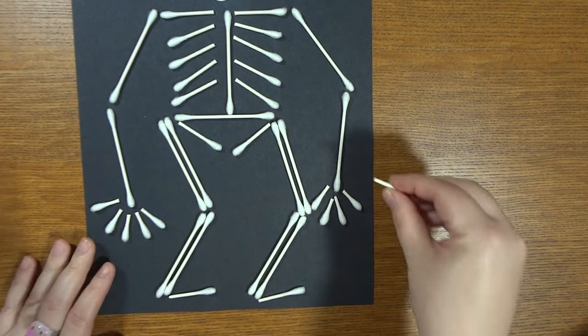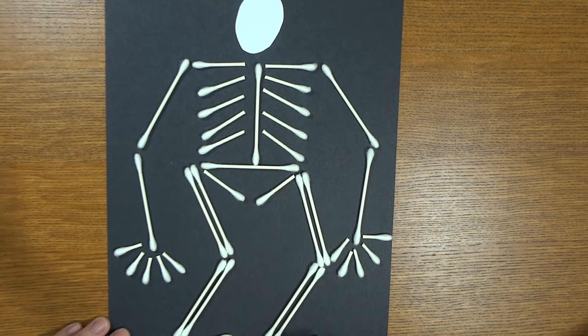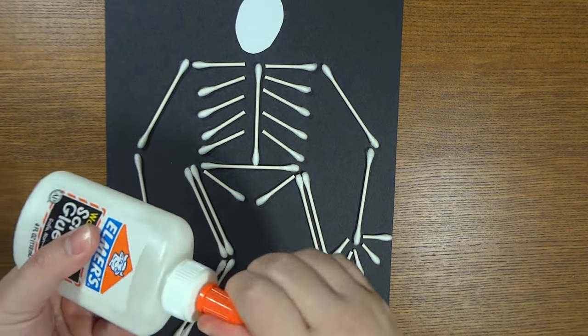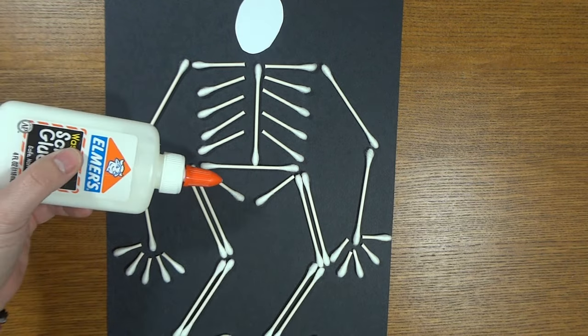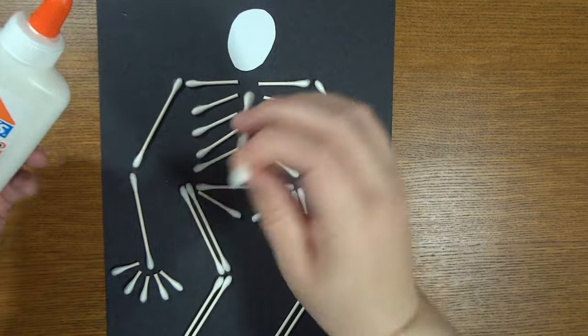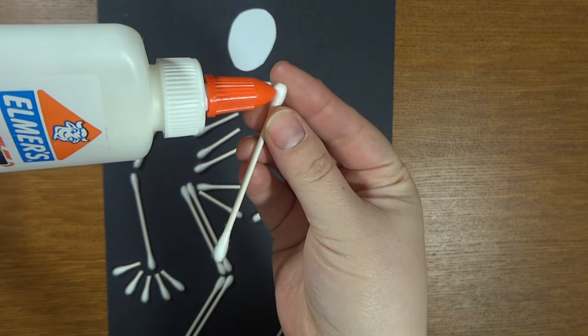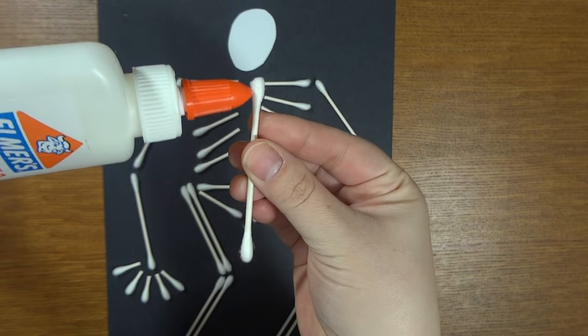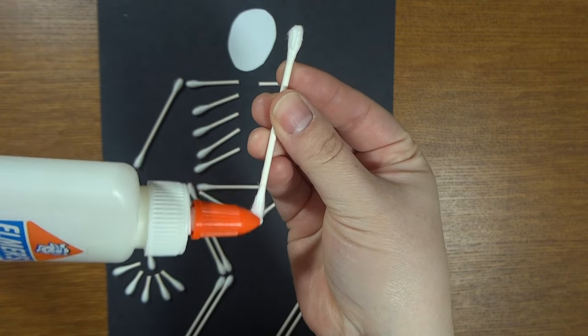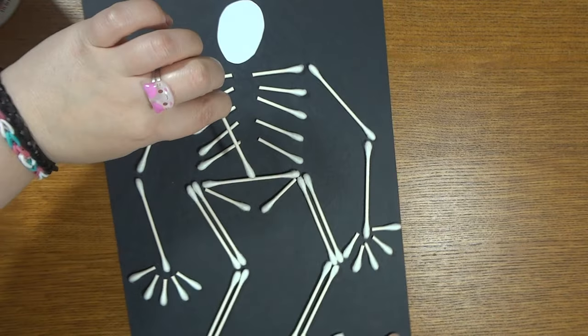Okay, so once you have it all laid out and you're happy with the design, you're going to go ahead and start gluing it down. Take your glue, and I like to start with the big pieces and work my way from there. You're just going to glue both ends - glue the top part of the cotton swab and the bottom, then lay it down on...